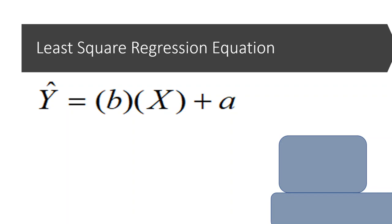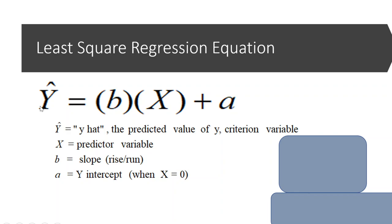The y-hat: we say y-hat because we want to differentiate it from y. If I'm recording your exam score, there's your real exam score and then your predicted exam score — those aren't necessarily going to be the same. So y-hat is the predicted value of y, while y is the true value from your natural data. We still have x as our predictor variable. Instead of m being our slope, b is the slope, and a is the y-intercept. The concepts of slope and y-intercept remain the same — just different letters.